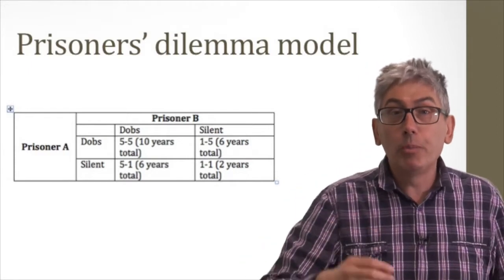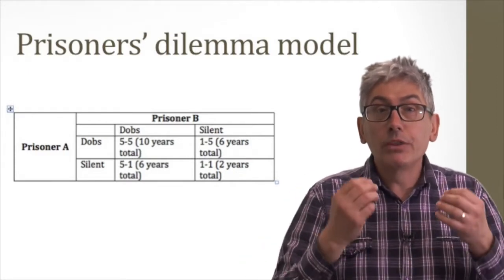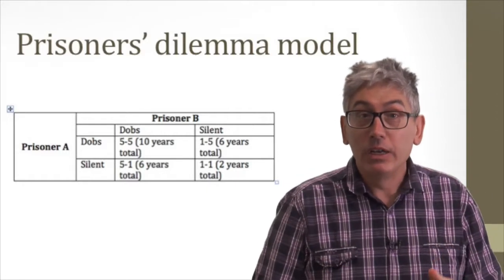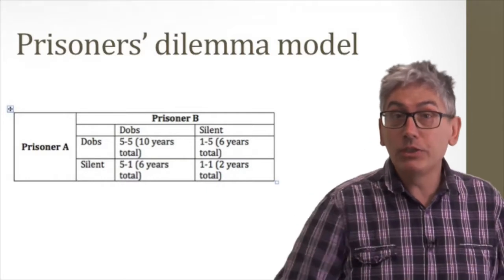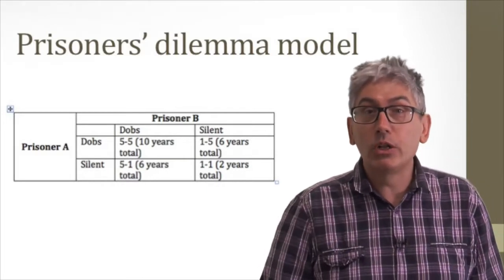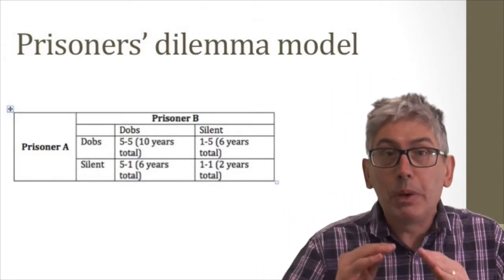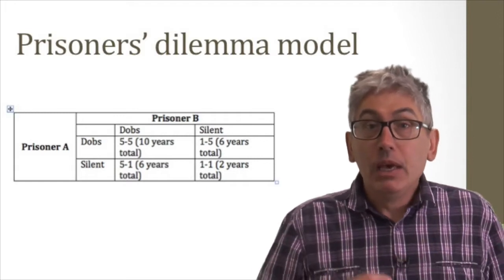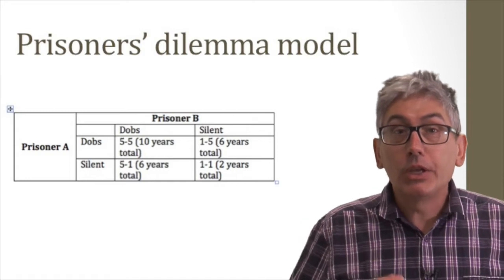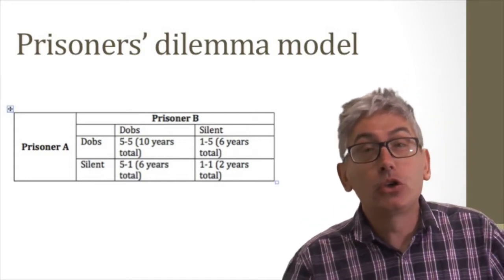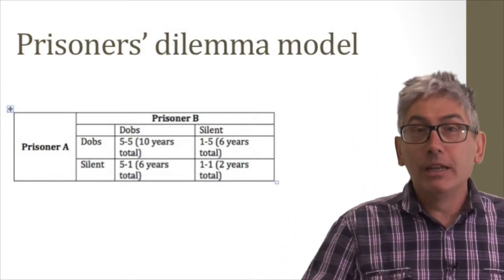So if we look at the overall picture, the payoff for dobbing can be very high if the other prisoner is a person of character. However, if both are narcs then the payoff is quite serious. Five years each, which still equates to a total of ten years. The best strategy is for them to cooperate and get the one year sentence. A total of two years that will be gone in a flash with both feeling that they've stood up for the other.